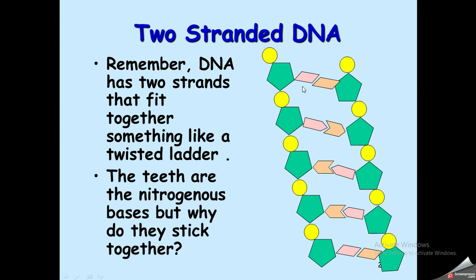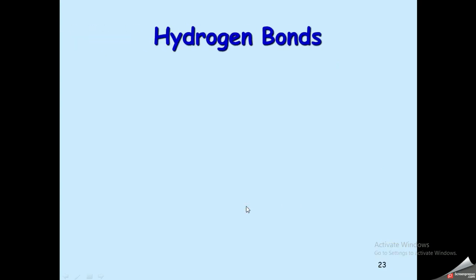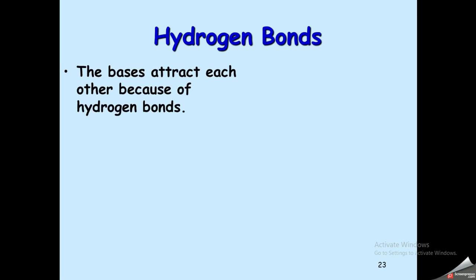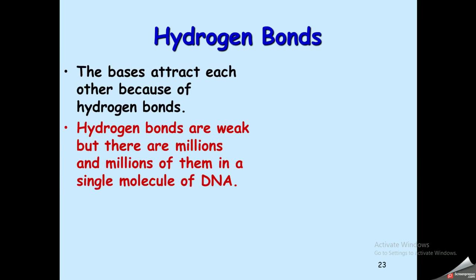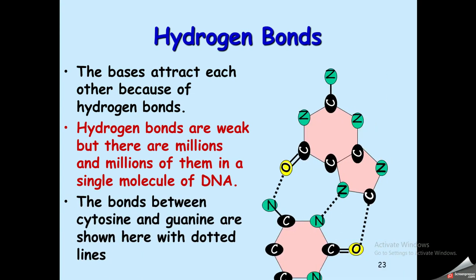How do the nitrogenous bases match with each other? The matching is through hydrogen bonds. Hydrogen bonds are weak bonds individually, but the stabilization of the double strand comes from the millions of hydrogen bonds formed between the nitrogenous bases.